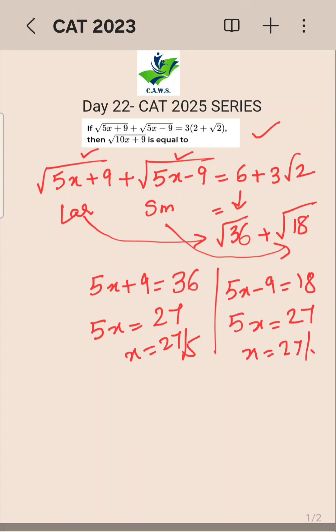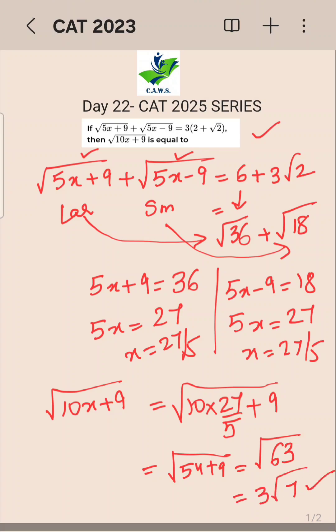√(10x+9) = √(10×27/5 + 9) = √(54+9) = √63. Now √63 can be written as 3√7, and that's your answer.